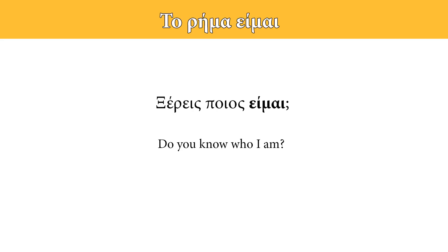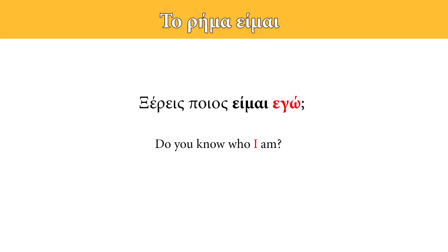Ξέρεις ποιος είμαι; versus Ξέρεις ποιος είμαι εγώ; In the second case, we use and stress the personal pronoun εγώ. The second one, depending on the tone of our voice, could be more aggressive — it could mean 'Do you know who I am? Don't mess with me, I'm someone important.'